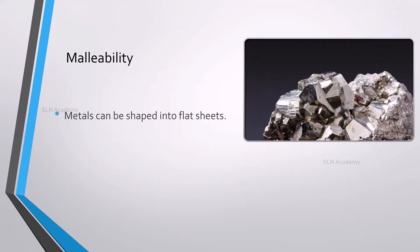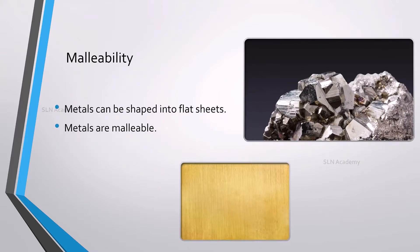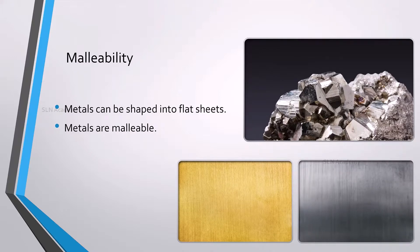Metals can be shaped into flat sheets. So, we can say that metals are malleable. Gold and silver are the most malleable metals.